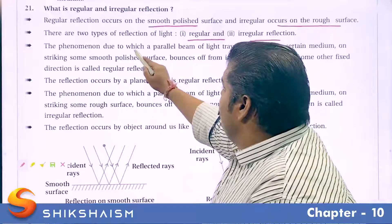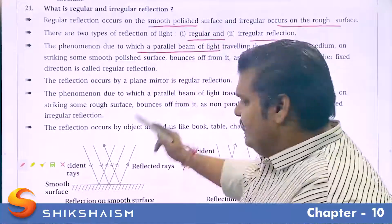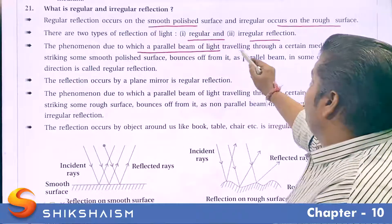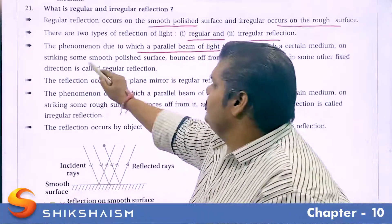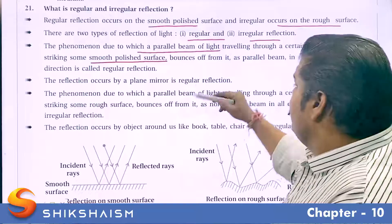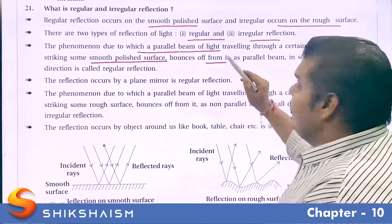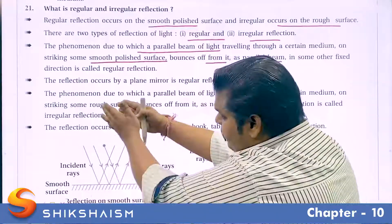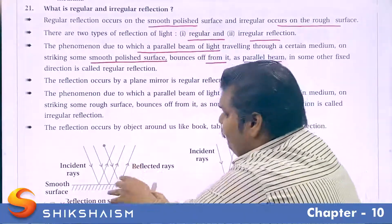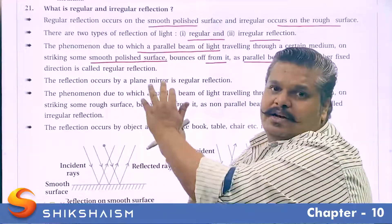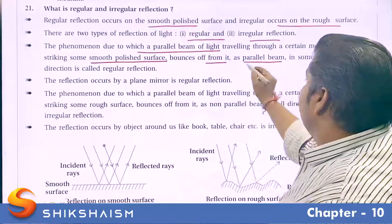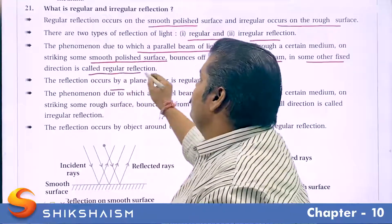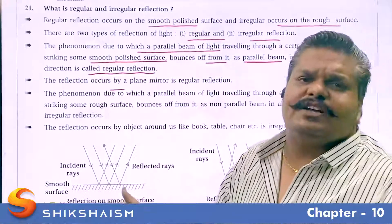The phenomenon due to which a parallel beam of light traveling through a certain medium, on striking a smooth polished surface, bounces off from it as a parallel beam again — the reflected rays are also parallel. After reflection, the rays are still traveling parallel to each other, meaning the reflected beam is also parallel in a fixed direction.